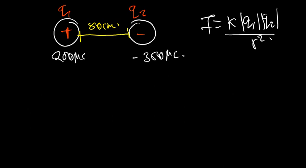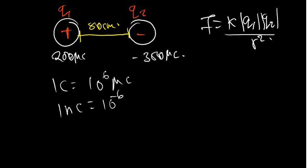We need to understand that the unit for electric charge is the Coulomb, but we have been given the charges in microcoulombs. To convert microcoulombs into Coulombs, multiply by 10 to the power of negative 6, since 1 microcoulomb equals 10⁻⁶ Coulombs.